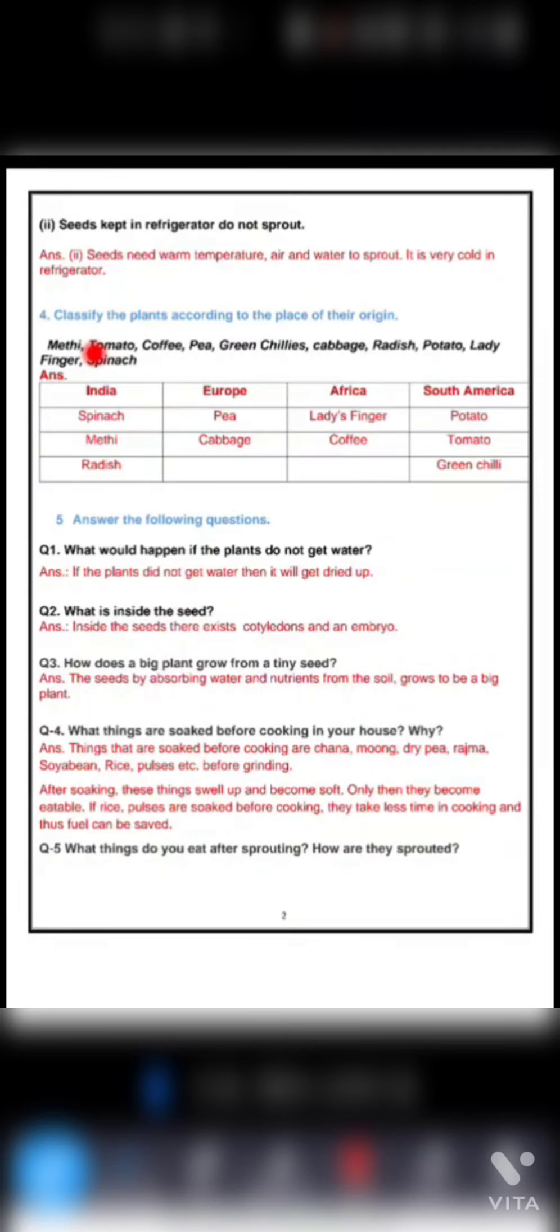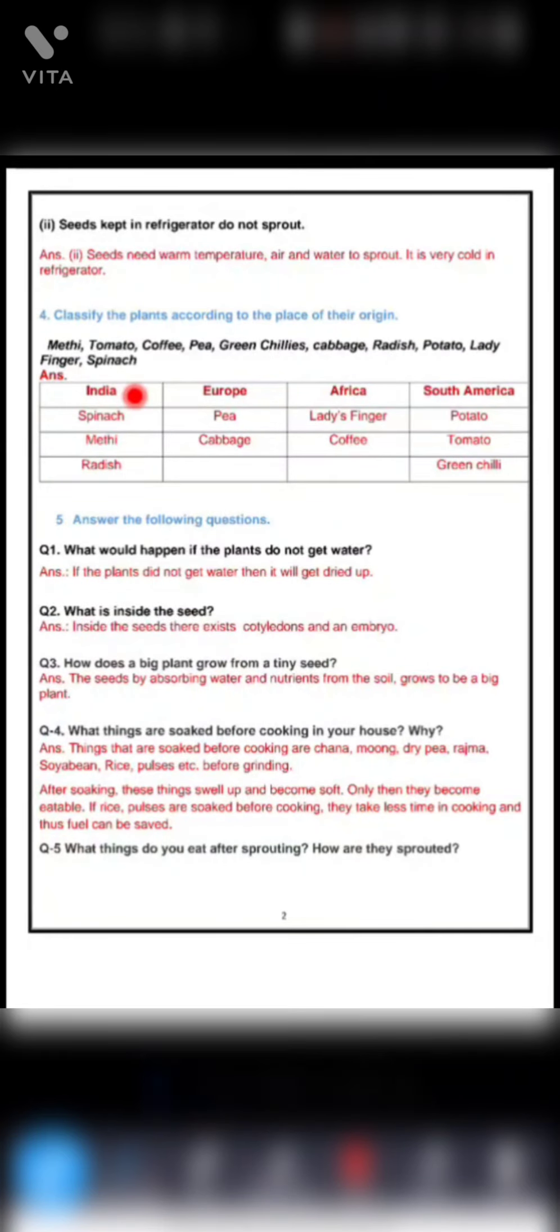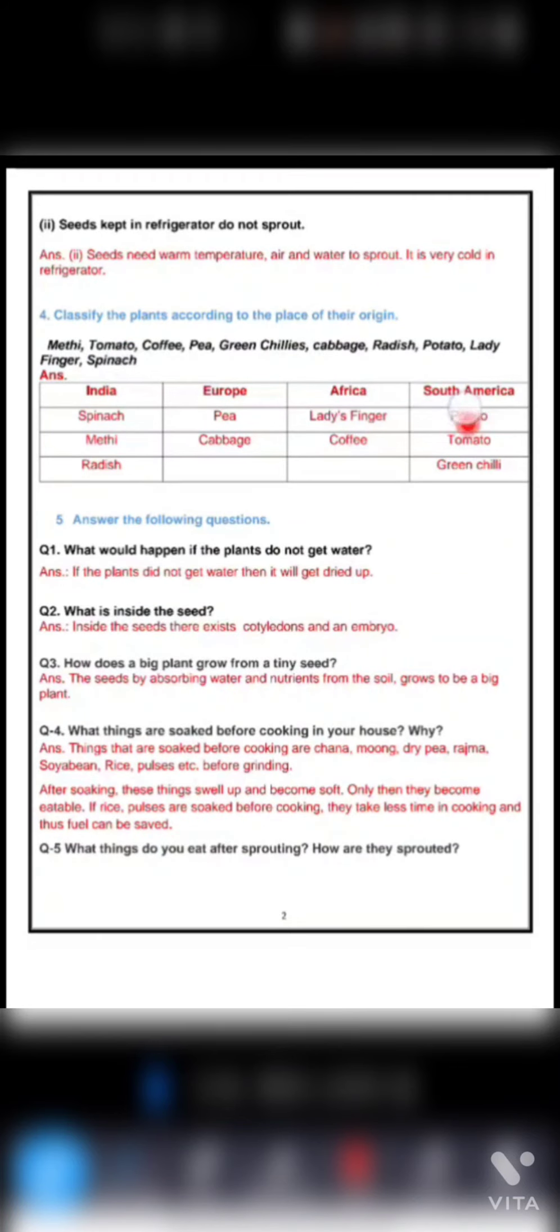Then fourth, classify the plants according to the place of their origin. Let us read the options first: methi, tomato, coffee, pea, green chili, cabbage, radish, potato, ladyfinger and spinach. What are the countries here? India, Europe, Africa and South America. First is methi. Methi belongs to India. Then tomato belongs to South America. Coffee belongs to Africa.